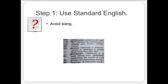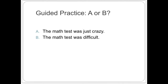Step one is probably the most important one for word choice: avoid using anything but standard English. Look to see if you have any slang or enigmatic phrases in your writing and revise if you do. Let's practice by choosing which sentence, A or B, is the better choice because it has standard English instead of slang.